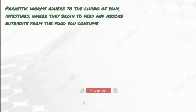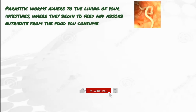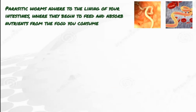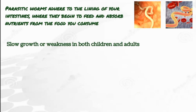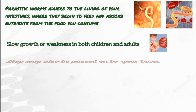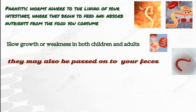Parasitic worms adhere to the lining of your intestines, where they begin to feed and absorb nutrients from the food you consume. This can lead to slow growth or weakness in both children and adults. Additionally, these worms may pass through the anal canal, causing itchiness, and they may also be passed on through your feces.